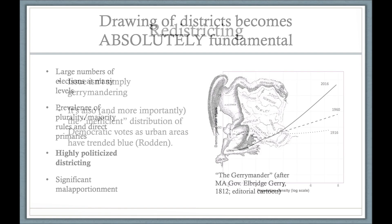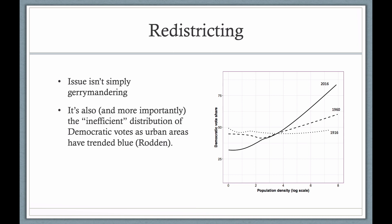Gerrymandering has become a lot easier as voters have become more geographically distinct. As you can see from this figure from Rodden's book, the more dense areas are, the more they tend to vote for Democrats — and that was not true as recently as 1960. In 1916, there was literally no relationship at all. When you have a strong relationship between population density and partisanship, it opens the door to very efficient gerrymandering, particularly for the Republican Party.